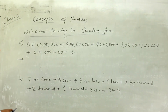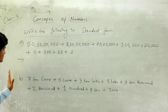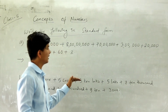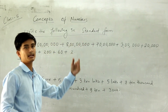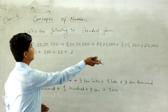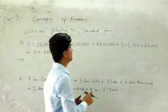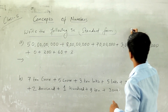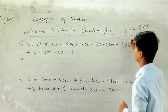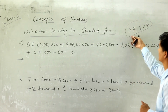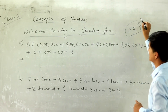Now, what you have to do is: I have given you two problems. We have to write this expanded form into standard form. Standard form means writing the number normally — for example, 73206 is the standard form. So previously I taught you standard form to expanded form; but here we have the expanded form and we have to convert it into standard form. It is very simple.